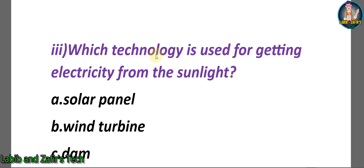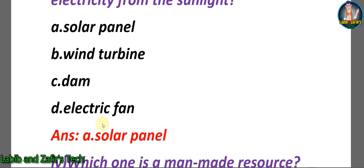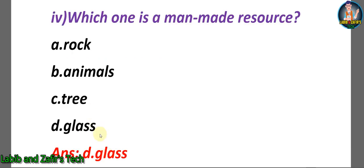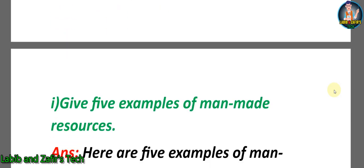Number three: Which technology is used for getting electricity from sunlight? A) Solar panel, B) Wind turbine, C) Dam, D) Electric fan. The correct answer is A) Solar panel. Number four: Which one is a man-made resource? A) Rock, B) Animals, C) Tree, D) Glass. The correct answer is D) Glass.